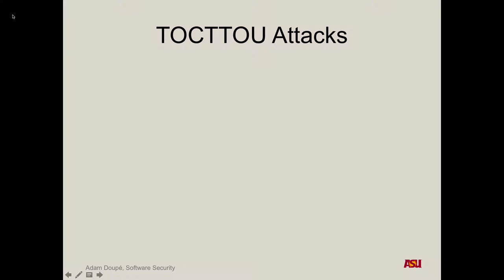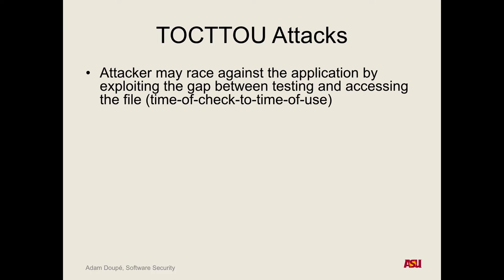These are actually one of my favorite types of attacks. The idea is the program is making a check — saying, what are the permissions on this file? And then later in that program's code, it does something to that file. So let's say it first checks: is this file owned by root? And then if it is, it'll open the file up for editing.